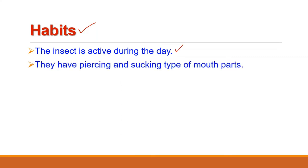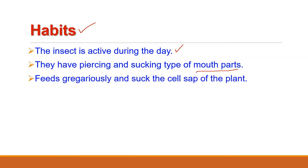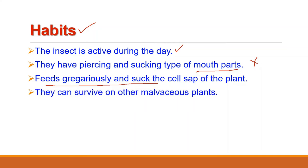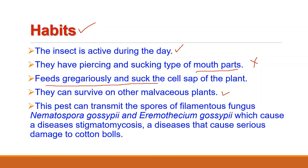Regarding the habits of Dysdercus cingulatus, this insect is active during the day — it is a diurnal insect. They have piercing and sucking type mouthparts and feed on cell sap. There is no hibernation stage in the life cycle, and like most Hemipteran pests they feed in groups. They can survive on other malvaceous plants but the major host is cotton. They adversely affect the crop and importantly, they also transmit spores of a pathogenic filamentous fungus causing a disease known as stigmatomycosis, which causes serious damage to cotton bolls.